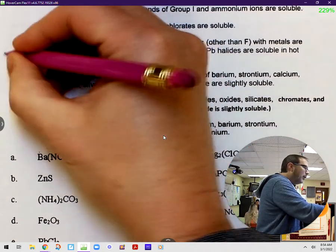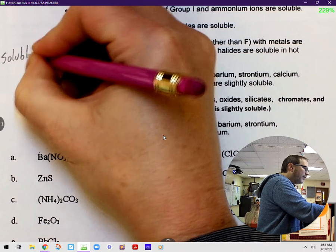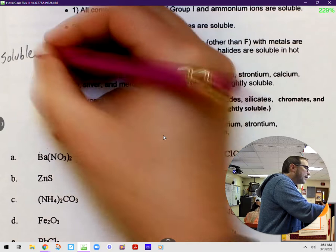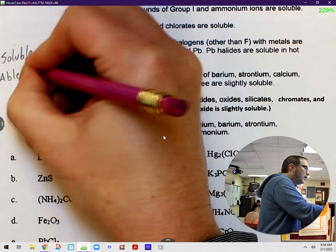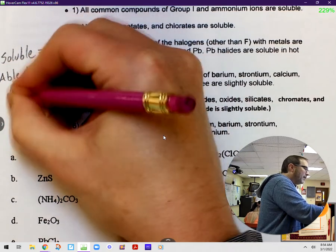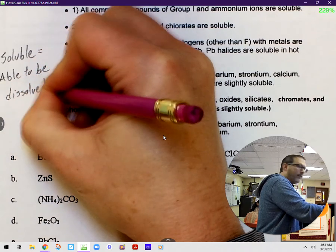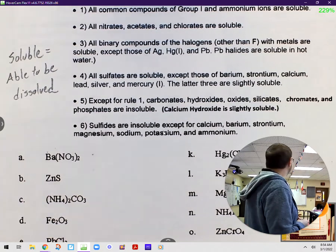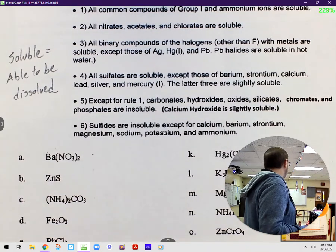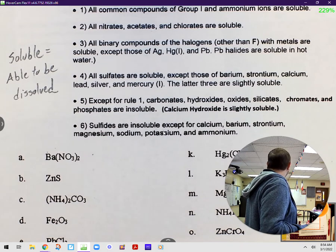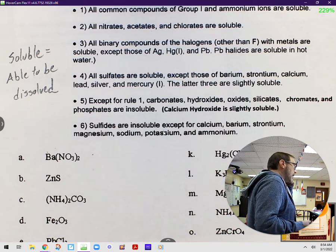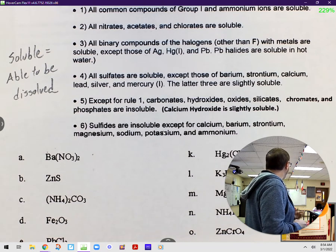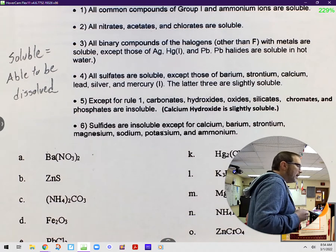So if we've got the word soluble, it almost looks like the word able is stuck in there, and that's how you remember this. It means it is able to be dissolved. That's easy. So if something is insoluble, it's just the opposite. It is unable to be dissolved in something. And you can also have some situations where something is slightly soluble or where something's only soluble in hot water, but we'll see if we run into any of those.